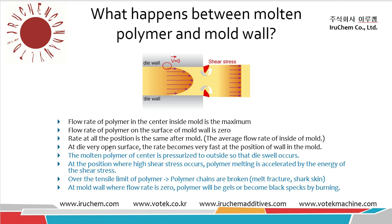At the die's open surface, the flow rate becomes very fast at the position of the wall in the mold. This means that the speed on the wall was zero inside the mold. However, right after the material comes out from the mold, the speed becomes quite fast. Because of this, there is a lot of shear stress occurring at this part, because the speed was almost zero inside, but immediately upon exiting the mold it becomes very fast.